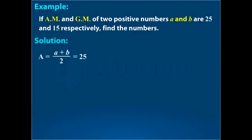Here, the arithmetic mean is 25, so we have A plus B over 2 equal to 25, or A plus B is equal to 50. Let's name this equation 1.